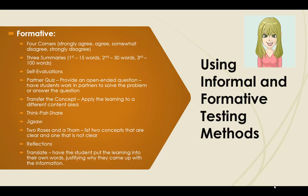Here are some examples of formative assessments. Four corners, where students stand in the corner of their choice — strongly agree, agree, somewhat disagree, or strongly disagree. There are also three summaries: the first is 15 words, the second 30 words, and the third is 100 words. You can do self-evaluations. A partner quiz is fun, where the teacher provides an open-ended question and has students work in partners to solve the problem or answer the question. Transfer the concept — apply the learning to a different content area. Think-pair-share. Jigsaw. Two roses and a thorn: list two concepts that are clear and one that is not so clear. Reflections, and then translate — have students put the learning into their own words, justifying why they came up with that information.